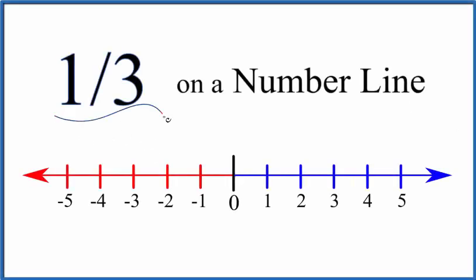Let's take a look at the fraction one-third on a number line. Here's how we do that. The red are negative numbers, the blue positive, and then we have that zero right there in the middle.